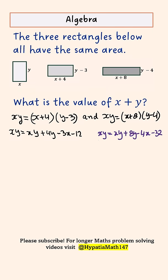it would be, once again, xy equals xy plus 8y minus 4x minus 32.